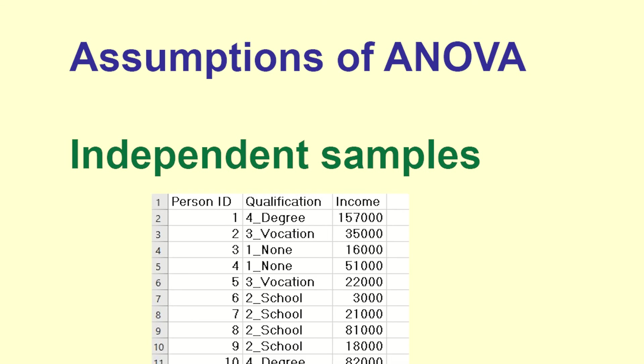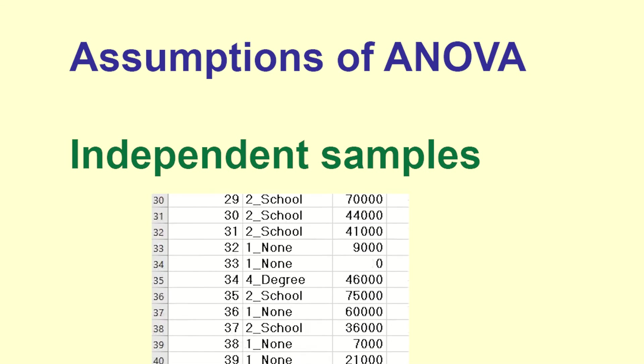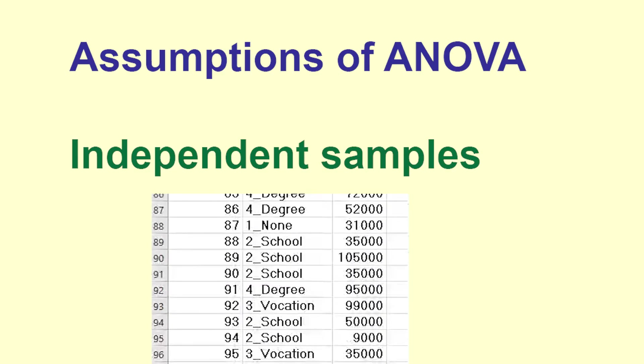There are some assumptions underlying the ANOVA test. The samples must be independent. In this case the entire sample was made up of 300 independent individuals so the samples are independent.